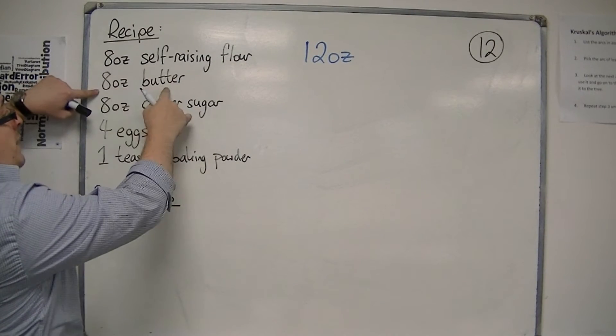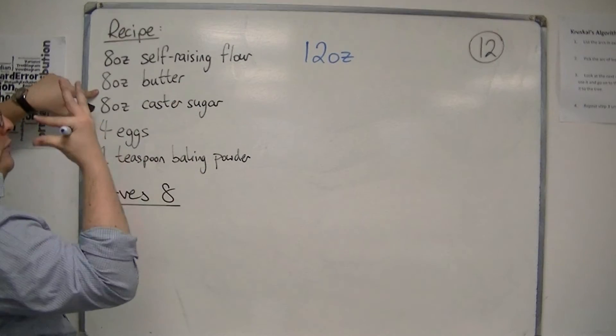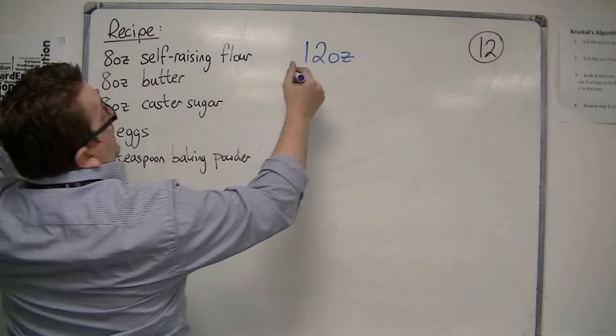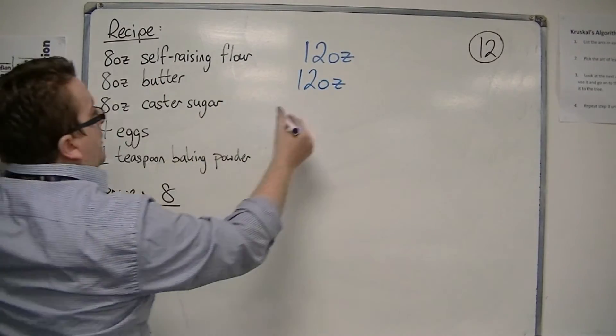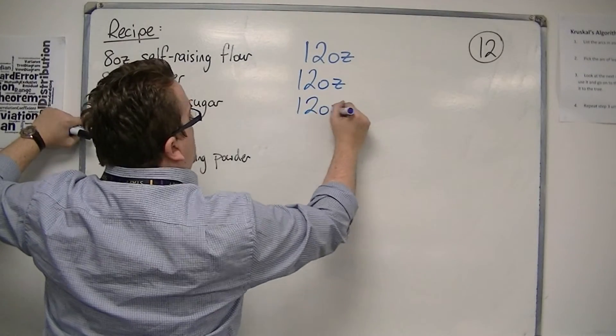8 ounces of butter means each person requires 1 ounce of butter, so I'm going to need 12 ounces of butter. And likewise for caster sugar, for exactly the same reasons.